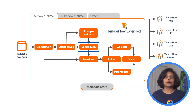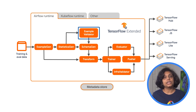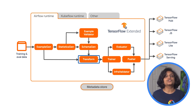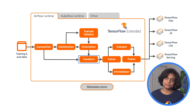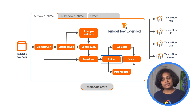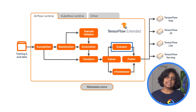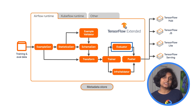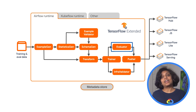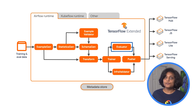SchemaGen determines the schema across our data, such as what are the types of our features, and for the categorical variables, what are the valid categories. ExampleValidator takes both of those results and looks for problems — things like examples that have the wrong type in a particular feature, or a categorical value that should not be there. Transform is where the feature engineering is done; it converts the feature engineering we want to do into a graph that becomes part of our model. Trainer takes that graph and the model defined using TensorFlow and trains it. Evaluator takes that trained model and does a deep analysis of its performance, looking not just at the entire data set but also at individual slices of data to understand how performance varies across different parts. It can be used for fairness analysis, like seeing if your model is performing differently for different types of model users.